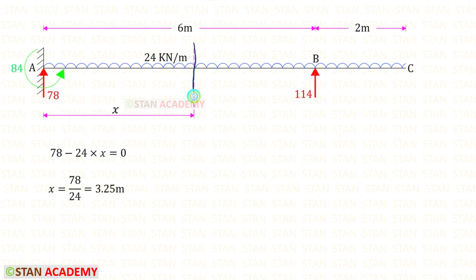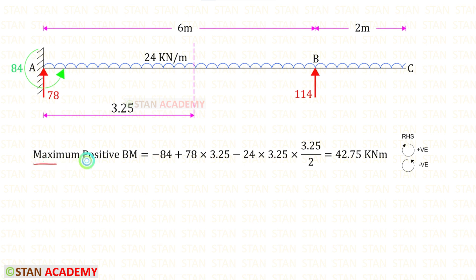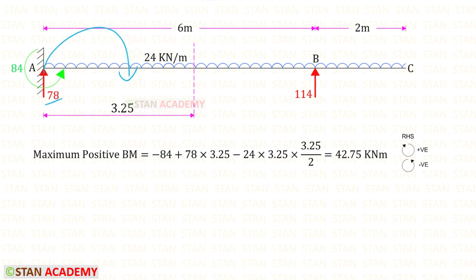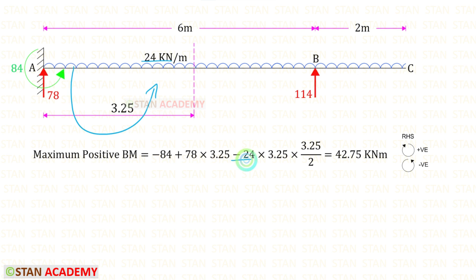I have made a section at a distance x from point A. We know that at this section the shear force is zero, and using that concept we can find x. Now let us find the maximum positive bending moment using the right-hand side rule: Ma acts anti-clockwise so it is negative, Ra acts clockwise so it is positive with distance 3.25, and the UDL acts anti-clockwise so it is negative. Multiplying the UDL by the distance and then by half gives the maximum positive bending moment of 42.75 kilonewton-meters.